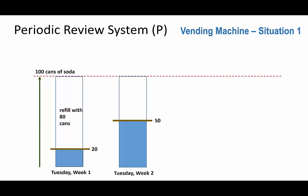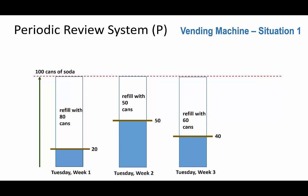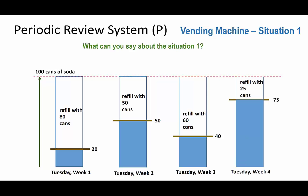The following week, the demand was low, so 50 cans are left, and the person refills it with 50 cans. In the third week, there are 40 cans left, and the person refills it with 60 cans. In the fourth week, 75 cans are left, and the person refills it with 25 cans.